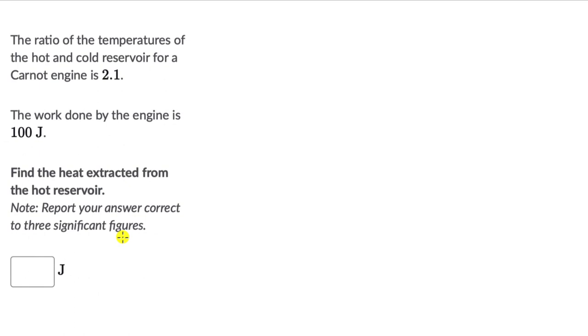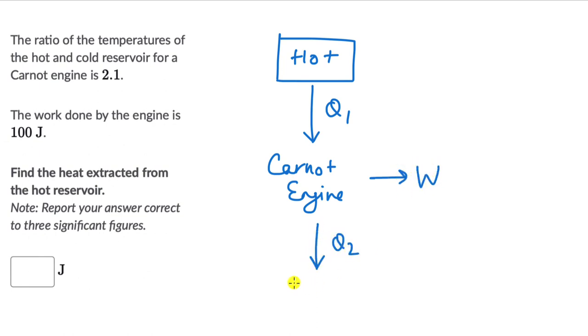Hopefully you gave this a shot. Now we need to figure out the heat extracted from the hot reservoir. We know that a Carnot engine takes in heat from a hot reservoir, let's say that heat is Q1. We have the engine right here. It takes some of that heat and converts it into work and then releases the rest of the heat to the cold reservoir.